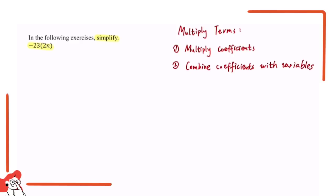For example, if you're given the expression 2 multiplied by 3a, 2 is the constant value whereas 3 is the coefficient of the variable a. So the first thing you want to do is multiply those two values: 2 times 3 equals 6, and 6 is going to be the final coefficient. Then combine 6 with the variable a, giving you 6a — that is the final result for that expression.